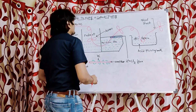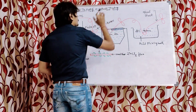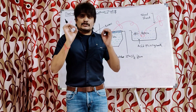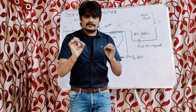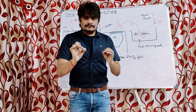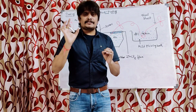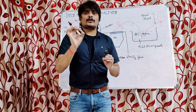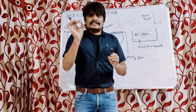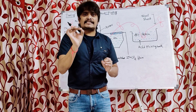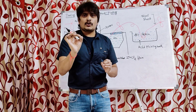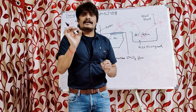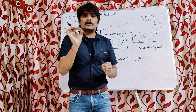Now let us discuss why it is also called cathodic coating. This process is called cathodic coating because the tin is being coated on the base metal, and with respect to the base metal, the tin acts as a cathode. Since the tin, that is the coating metal, acts as a cathode with respect to the base metal, tinning is also called cathodic coating.